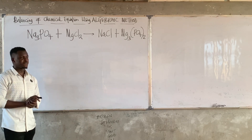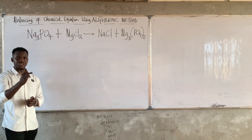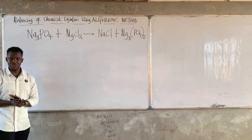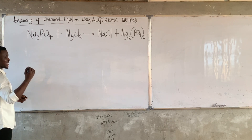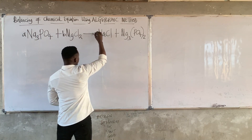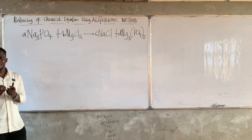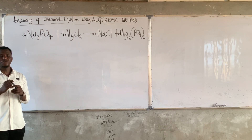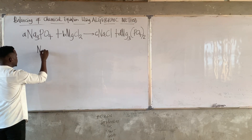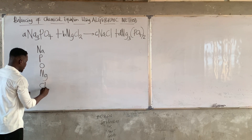We have this other question here for us to solve. If you are viewing this for the first time, you can check our previous video on how we explained balancing of equations using the algebraic method. Step 1 is to assign unknown coefficients: I put A here, B here, C here, and D. How many elements do we have? We have sodium, phosphorus, oxygen, magnesium, and chlorine.